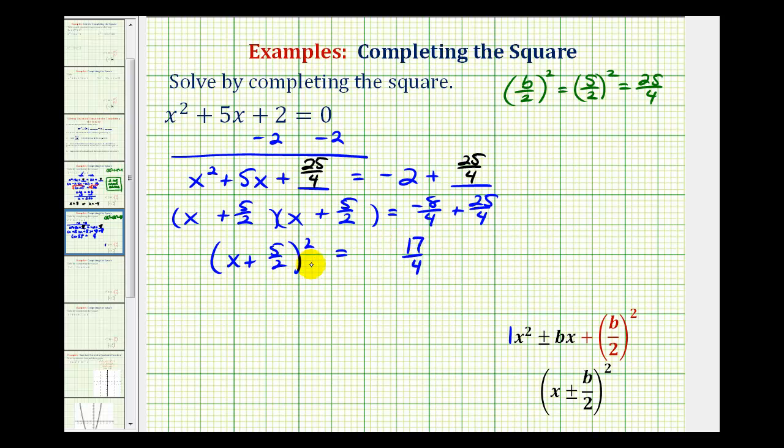Now we can solve for x by taking the square root of both sides. Remember, when we do this, we need a plus or minus sign to obtain both solutions.